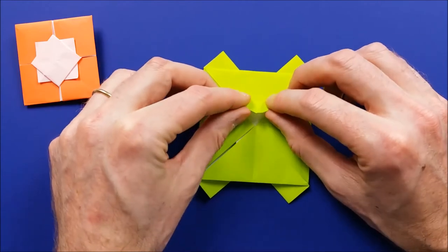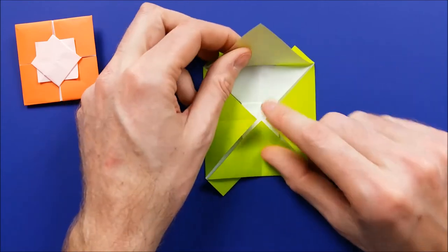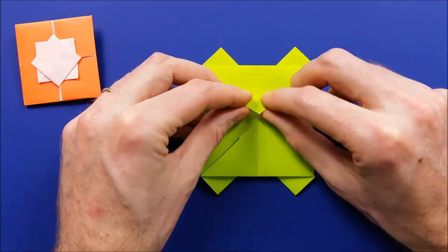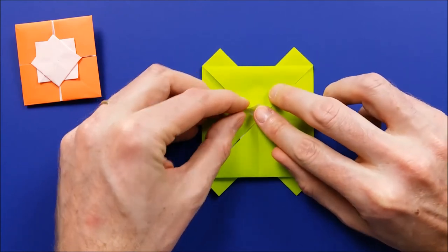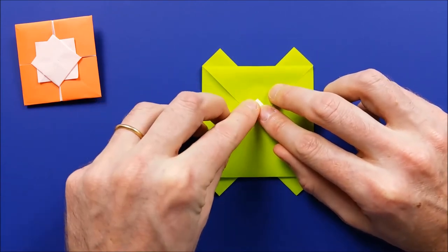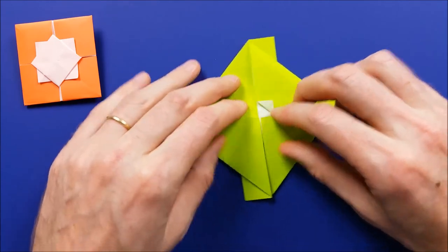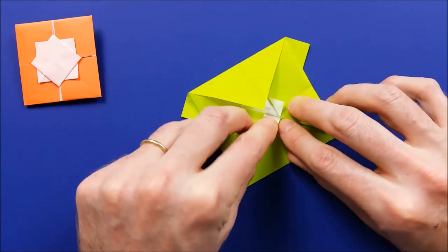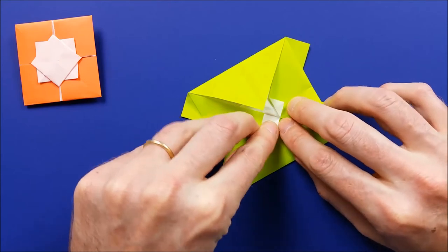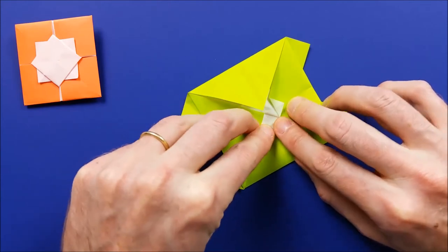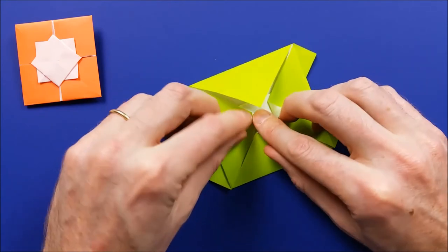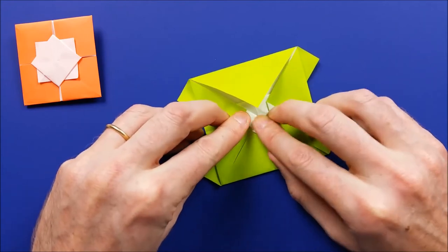And we'll fold back the corners. So here we have a fold. We want to fold back before this fold. Something like this. And then repeat on the other corners. We can try to make the same size, but if it's not exactly the same size, we can adjust it later.